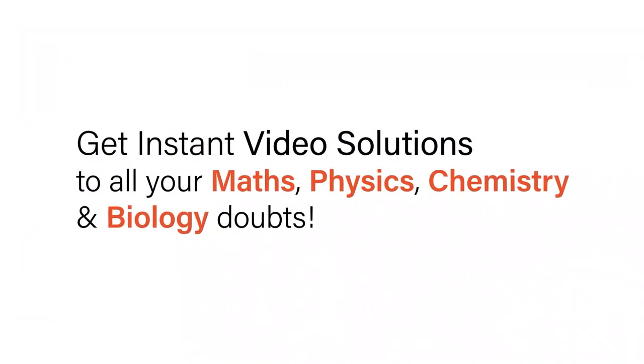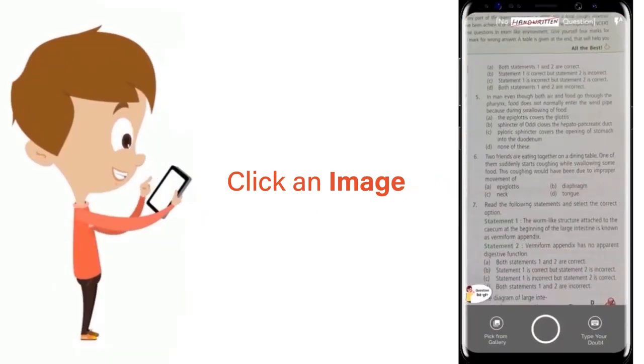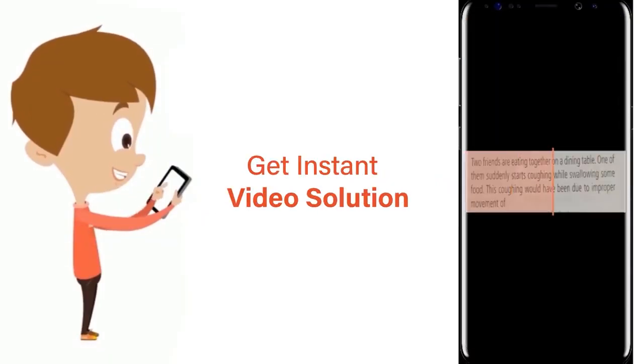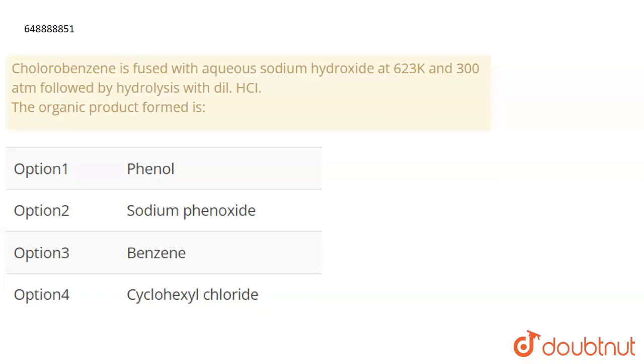With Doubtnet, get instant video solutions to all your maths, physics, chemistry, and biology doubts. Just click the image of the question, crop the question, and get instant video solution. Download Doubtnet app today. The question is: chlorobenzene is fused